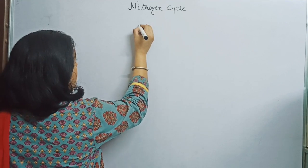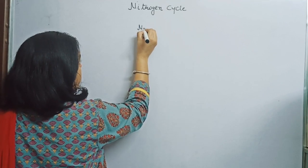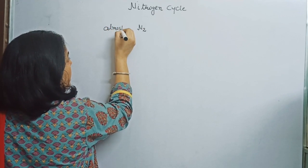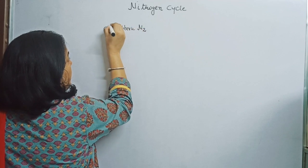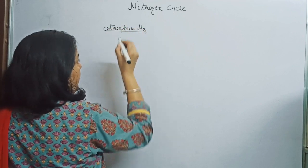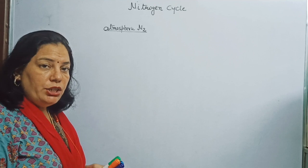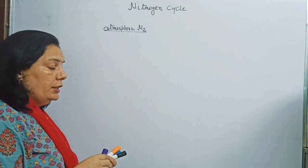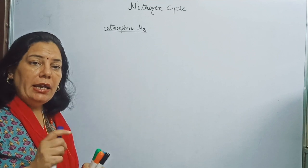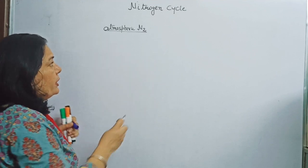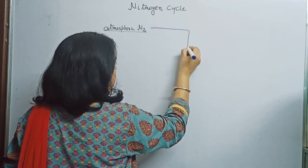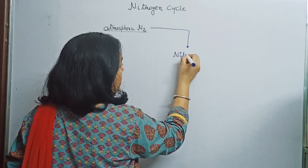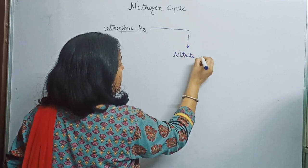The nitrogen cycle starts with atmospheric nitrogen. This atmospheric nitrogen is present in gaseous form. So first, this nitrogen is converted into nitrites and nitrates.